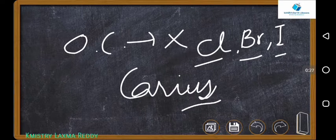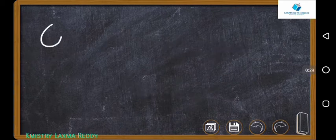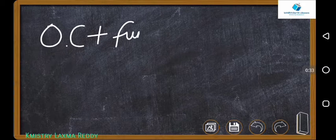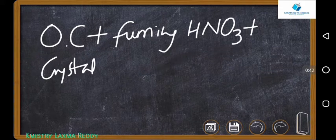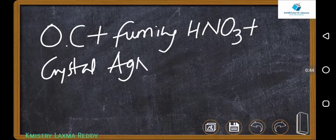This is a simple method. First, an organic compound is taken which contains halogens. It is added with fuming HNO3, concentrated nitric acid, and crystals of silver nitrate AgNO3.